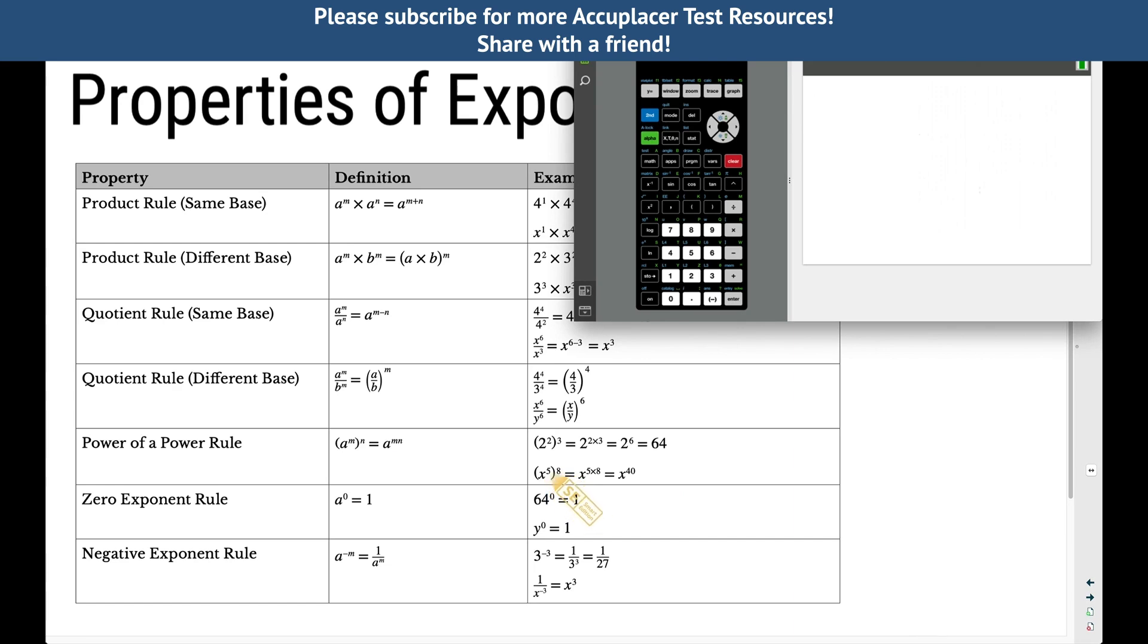So a base of x to the fifth and all of that is raised to the eighth. We take five times eight, we get 40, so that should be x to the fortieth power. Let's try one on the calculator. Let's take three and raise it to the fourth, and then let's take all of that and let's square it. Three to the fourth, whatever that is, if we square it, we should get 6561. If we apply this power of a power rule, if we take four times two, we should be able to take this three and raise it to the eighth power. A power to a power, we multiply our exponents and notice we do get 6561.